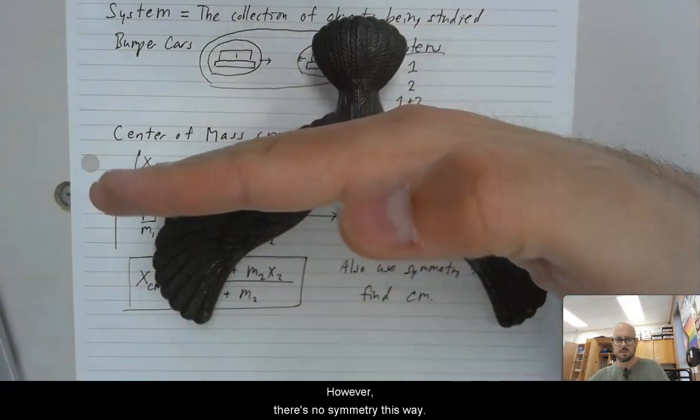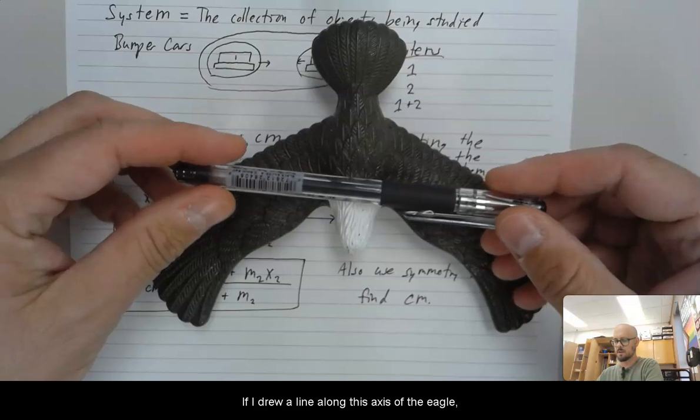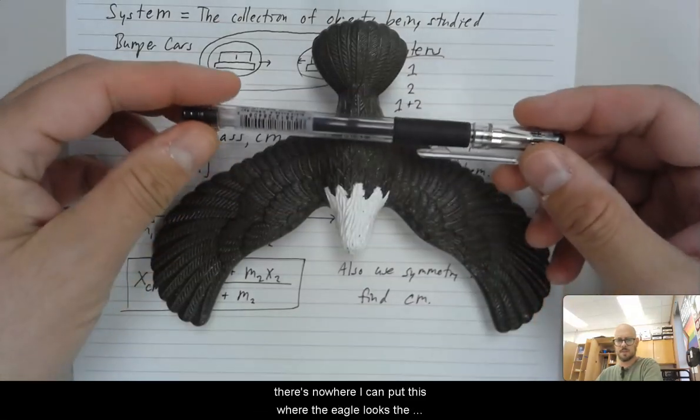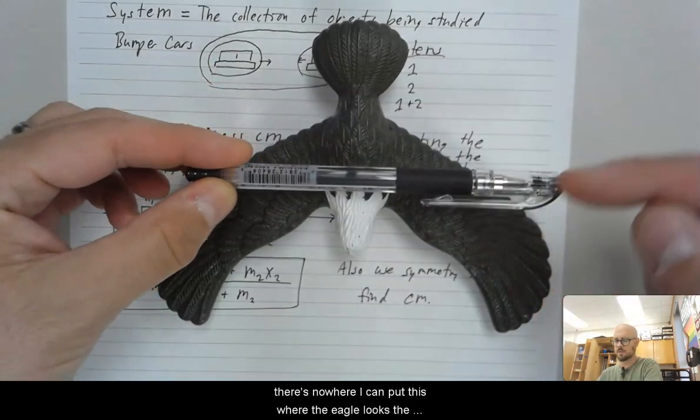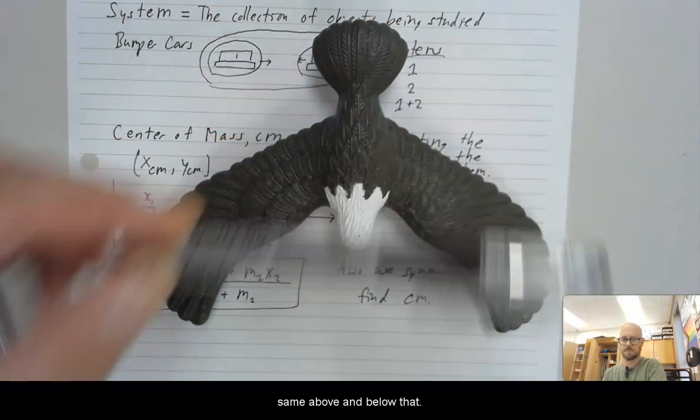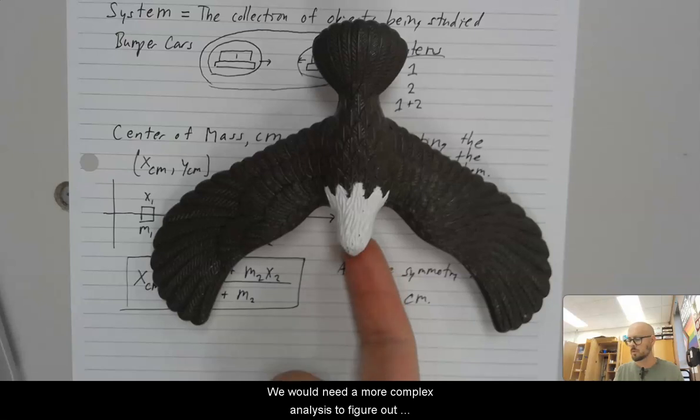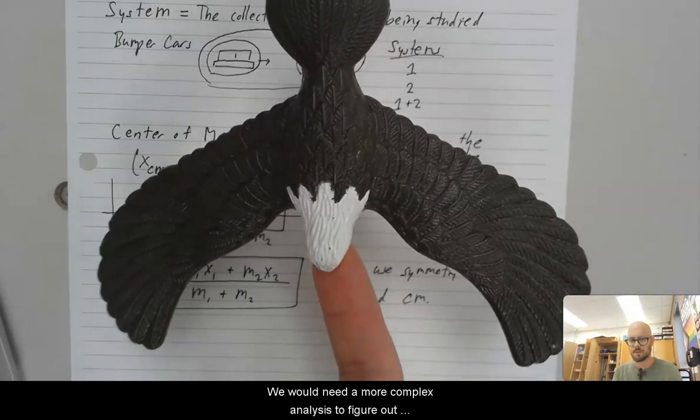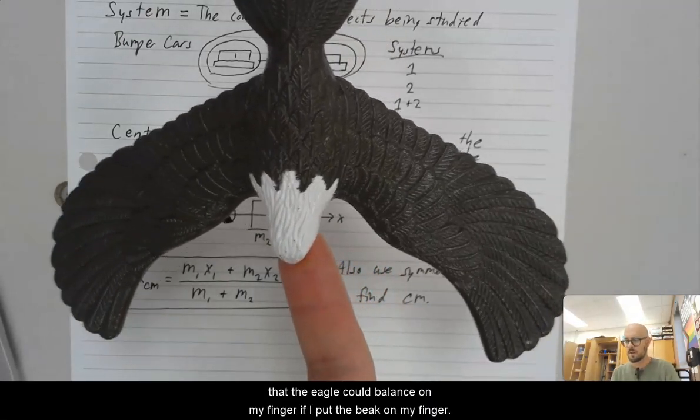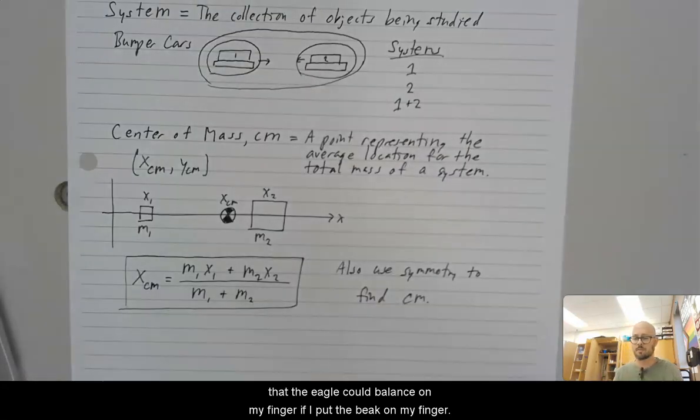And so I can be confident that the center of mass lies along this line. However, there's no symmetry this way. If I drew a line along this axis of the eagle, there's nowhere I can put this where the eagle looks the same above and below that. So symmetry can only get you so far with the eagle. We would need a more complex analysis to figure out that the eagle can balance on my finger if I put the beak on my finger.